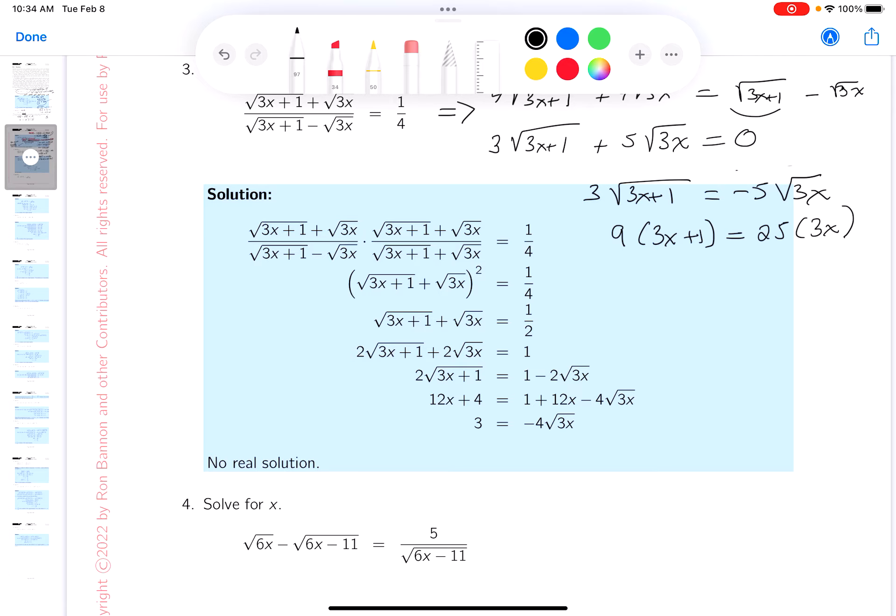9 times 3x plus 1 equals 25 times 3x. Not so bad. Let's write this down. And again, I'm not thinking. If I were thinking, I would have stopped moments ago. But do you get 27x plus 9 equals 75x? Then I would take 27 from both sides. So that's going to be 48x equals 9. And lo and behold, x, nice number, 9 over 48. I'm going to reduce that to 3 16ths.